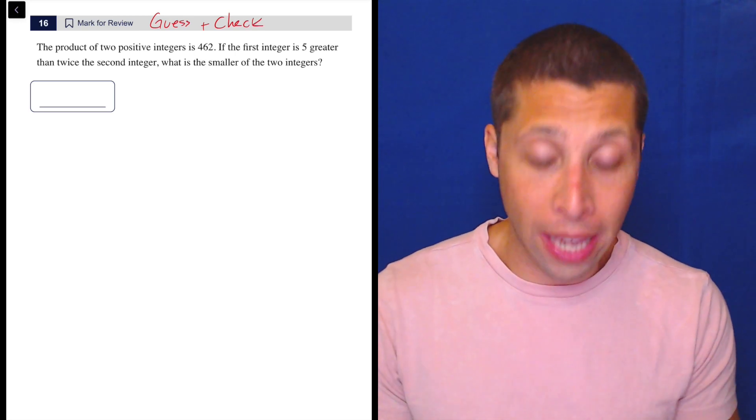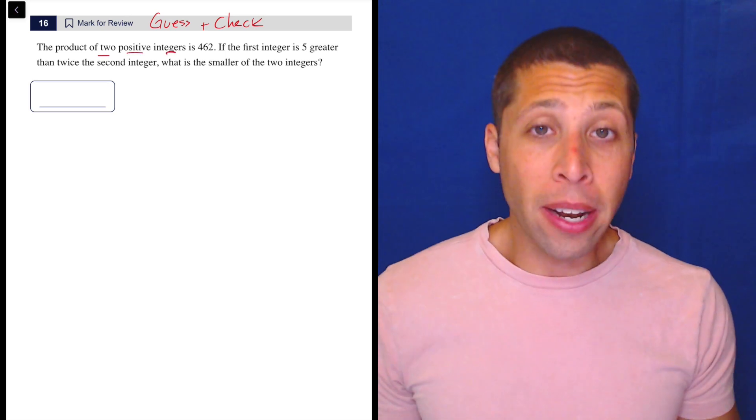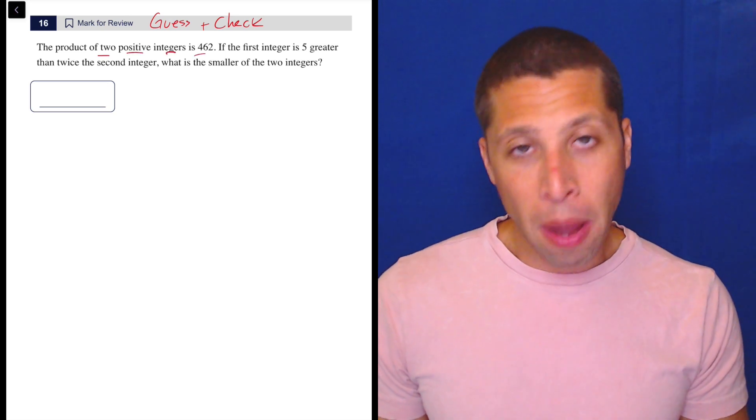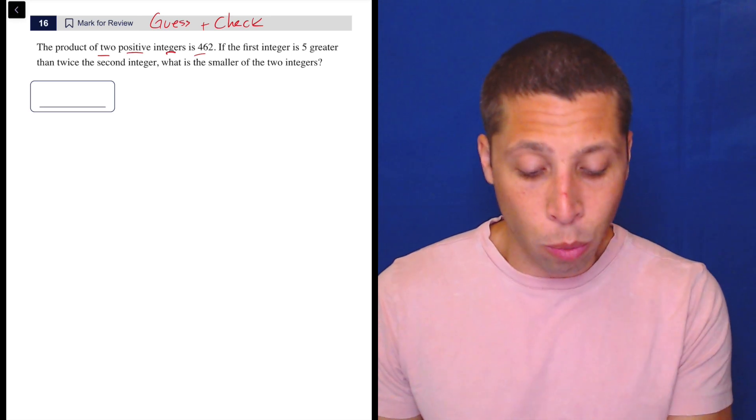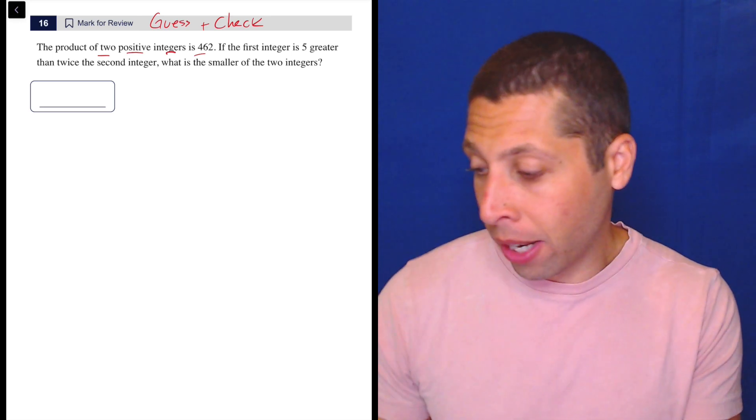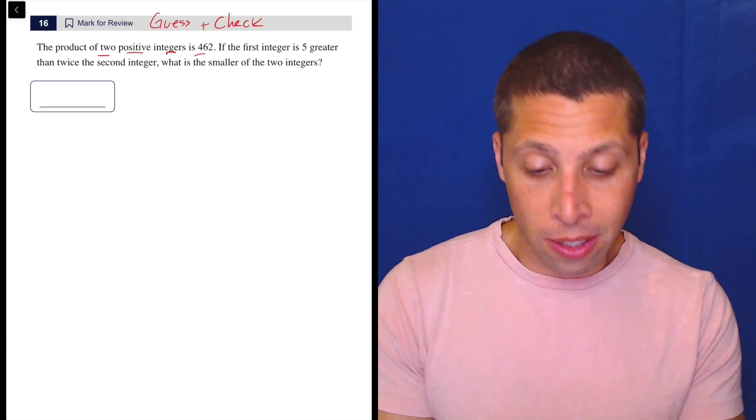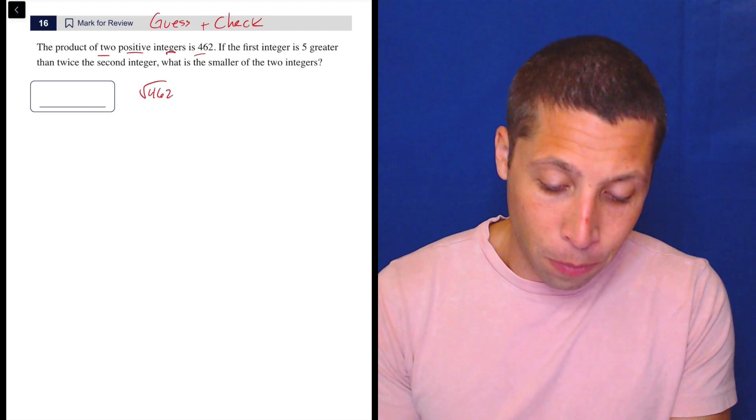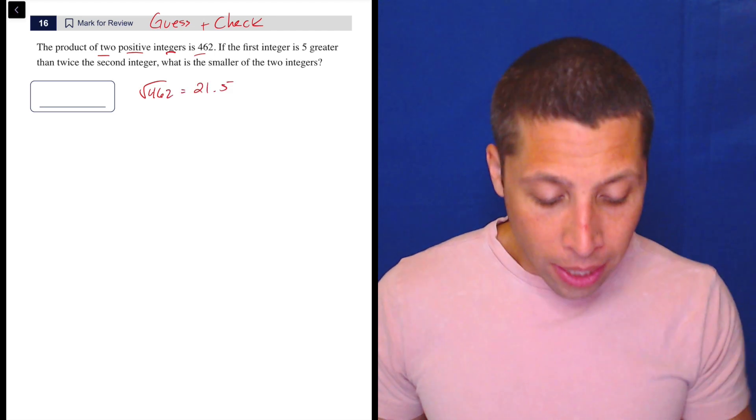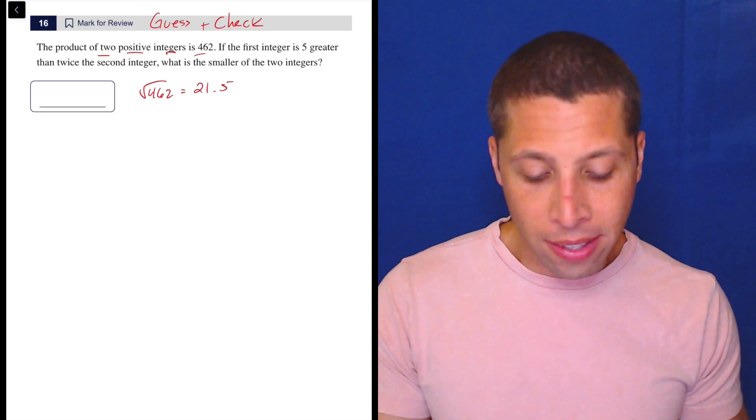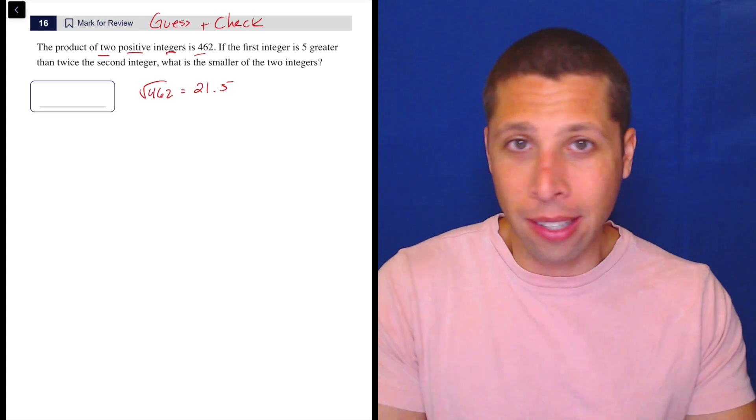We're talking about the product, meaning multiplication of two positive integers. So I am kind of limited in what things can be. They have to be 462. So in my mind, if I just cut 462 and took the square root of it, like what two things would multiply to it? I can just do that in my calculator. The square root of 462 is 21.5 roughly. But I realized that there's a relationship between the integers. One is five greater than twice it. So I'm not going to pick 21 and 21, I'm going to pick random things.